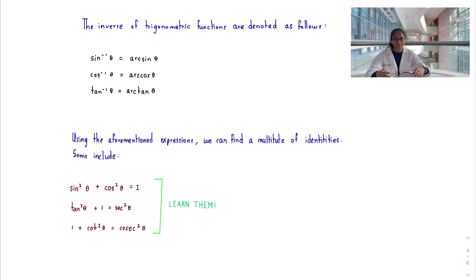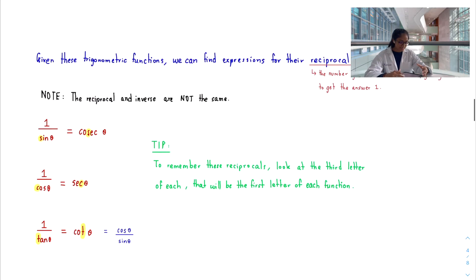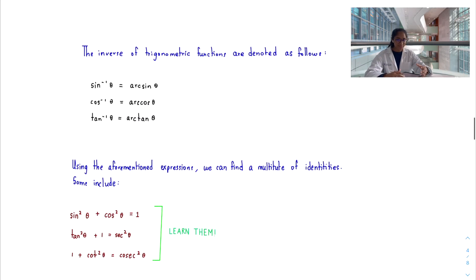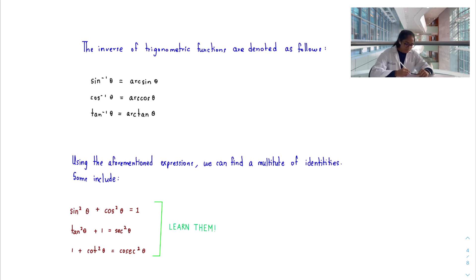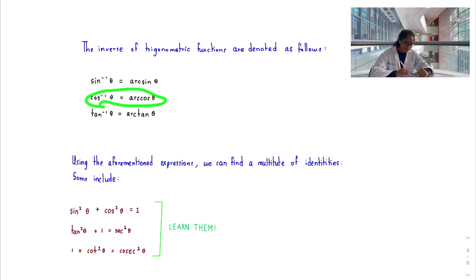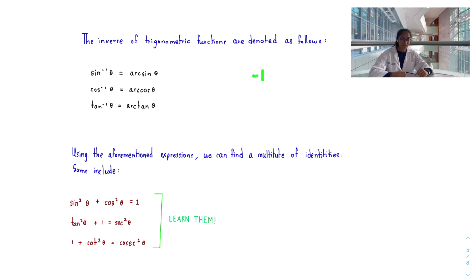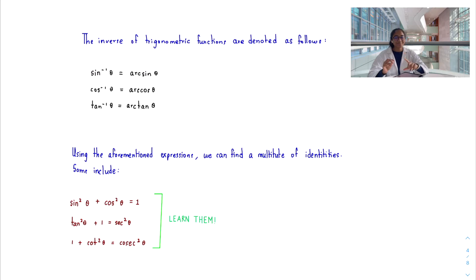Now let's look at the notation for inverse trigonometric functions. The inverse and the reciprocal are not the same thing. The inverses are called arcsin, arccos, and arctan, and they are denoted with a superscript minus one in the top right corner, which signifies that we are dealing with the inverse.